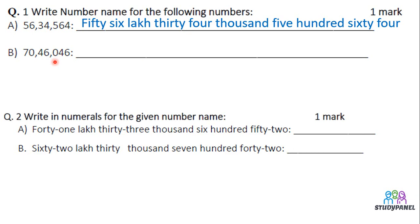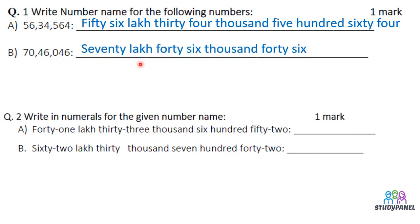4 at 10's, 0 at 100, this is 1000, this is 10,000, this is lakh and this is 10 lakh. So we will read it out like 70 lakh 46,000, 46. Here many children write 70 lakh 46,000 and 46,000, but we have to be careful with that.